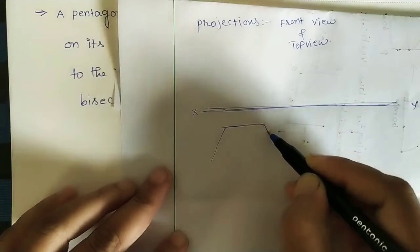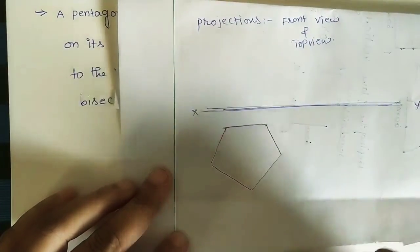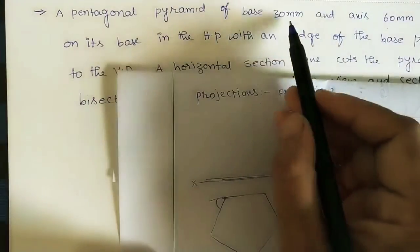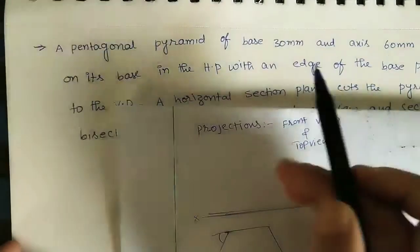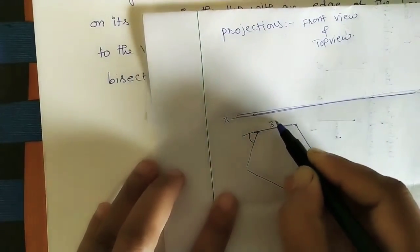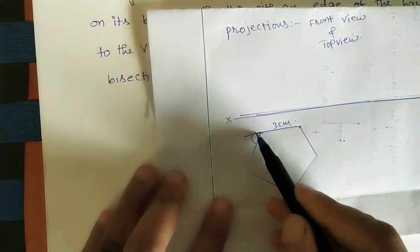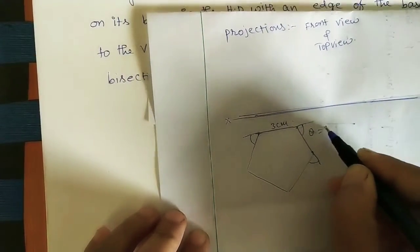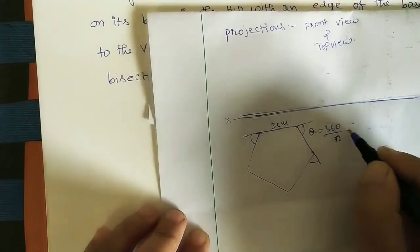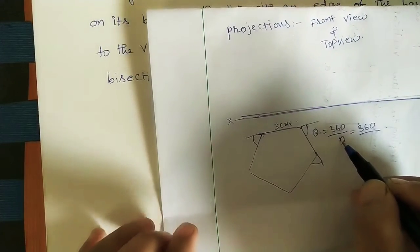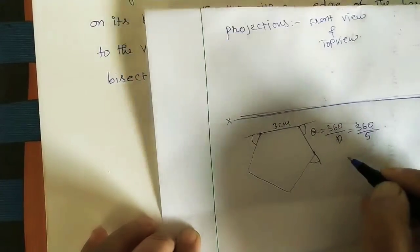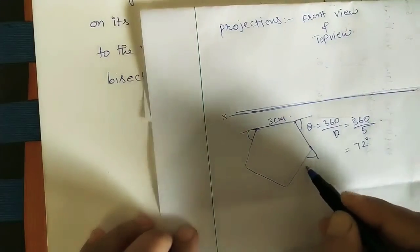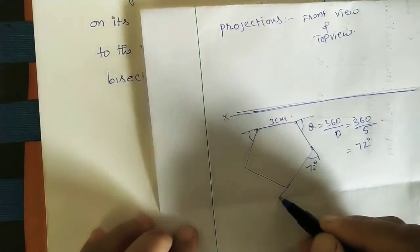For drawing the pentagon, we use the outer angle formula. The outer angle formula for any polygon is 360°/n, where n is the number of sides. For a pentagon, n=5, so 360/5 = 72°. All outer angles at all corners are 72 degrees.